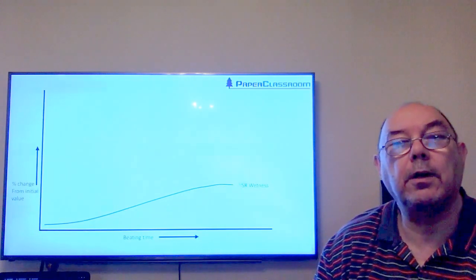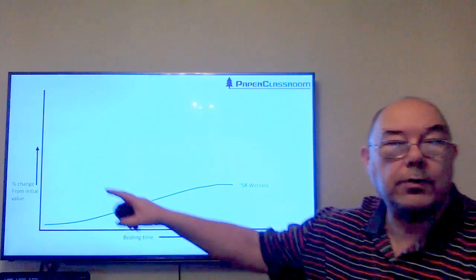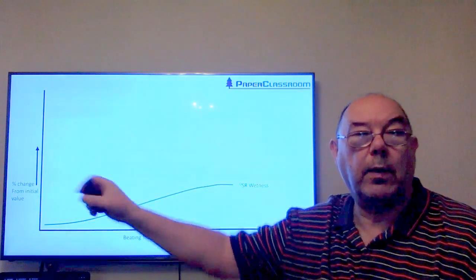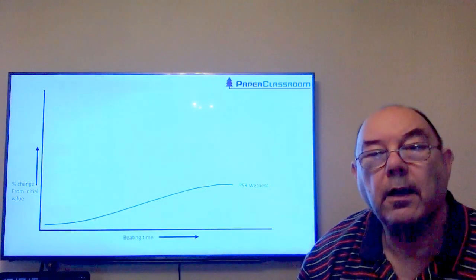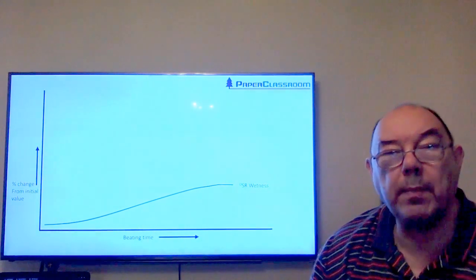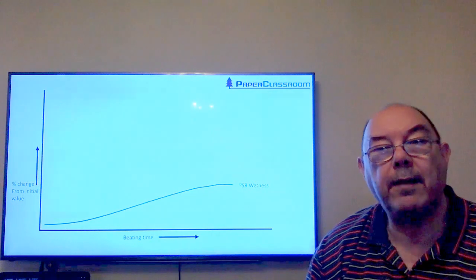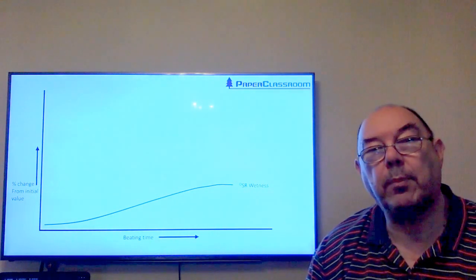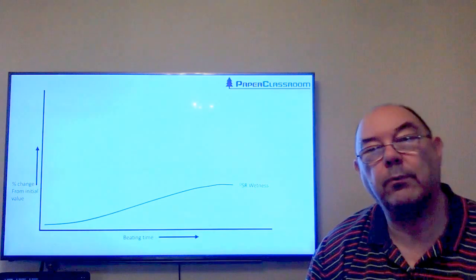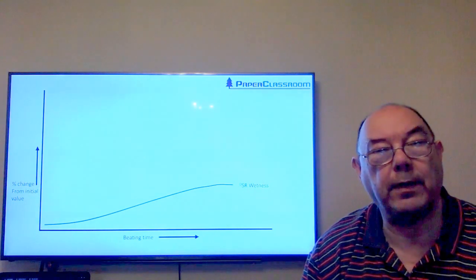This is a very typical curve. We've got Schopper-Riegler value on the y-axis and time on the x-axis. We've set up our beater with the pulp revolving around with the weight on, and every few minutes we've taken a sample of pulp, put it on the Schopper-Riegler tester, and determined its drainage values.